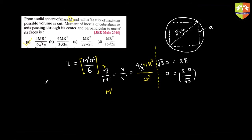Substituting m' and a into I = m'·a²/6 gives option A as correct. Notice that this problem is more about how you think and break down a problem than about reading theory repeatedly. That analytical thinking develops only when you take many tests under time constraints — you encounter varieties of questions and learn to think on the spot.